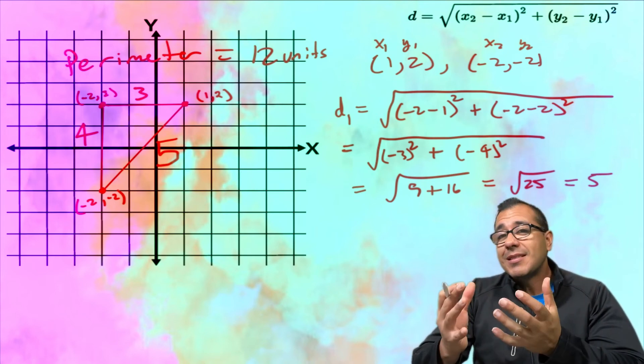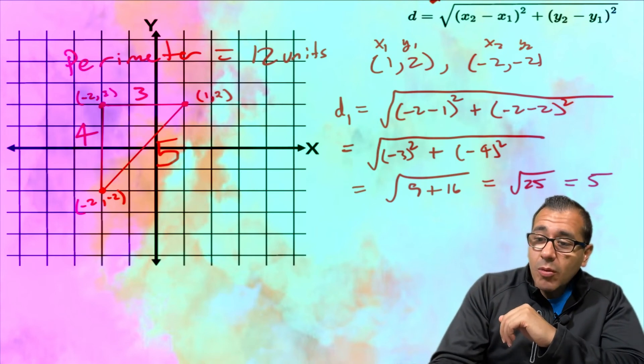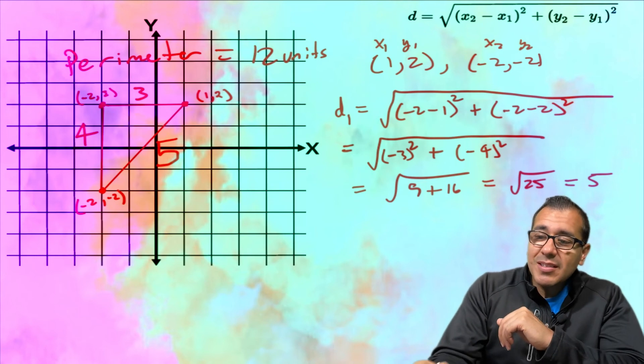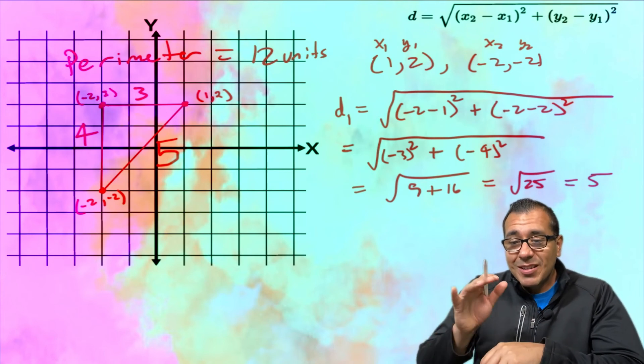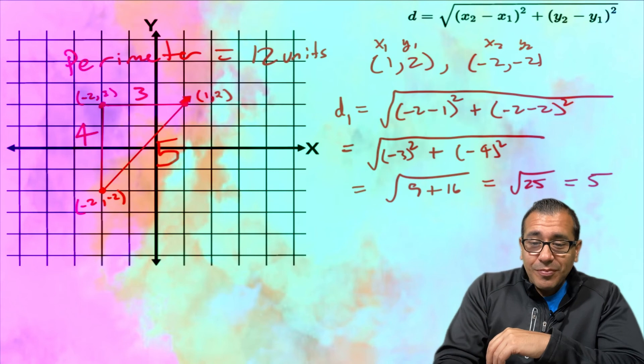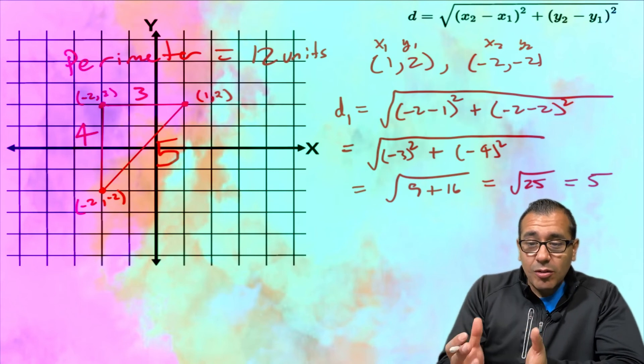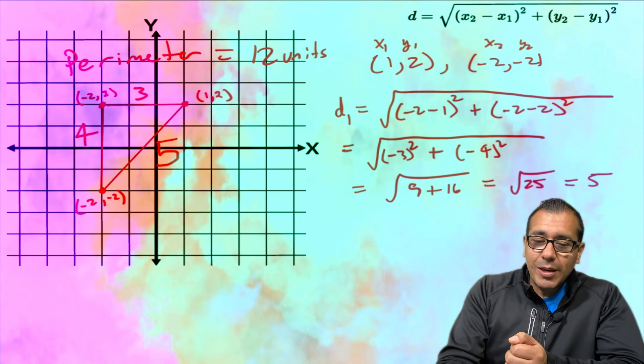But for this example I'm saying what happens if we don't have all these nice scenarios? Well we could always go back and use our distance formula. So again to find the perimeter when you're given the triangle on the graph, I would use the distance formula to find the lengths of those sides.